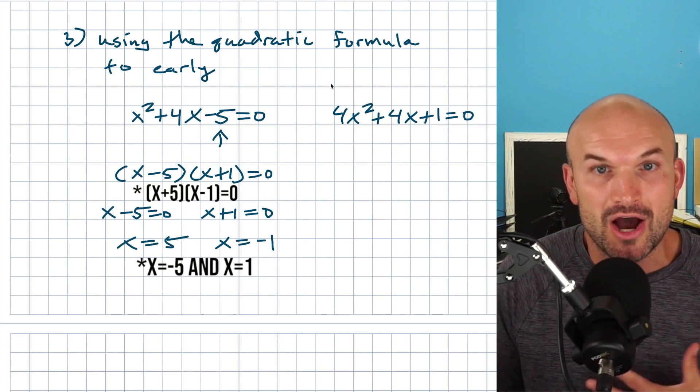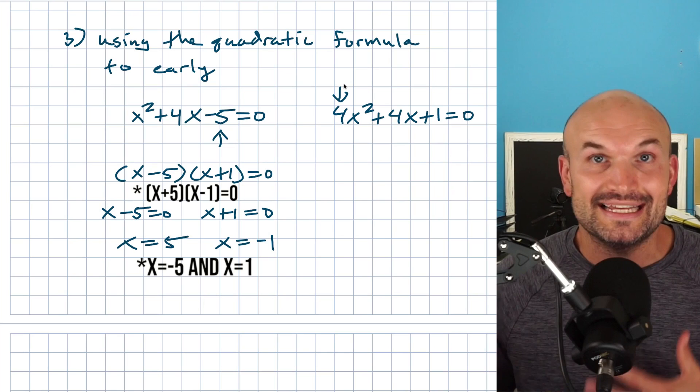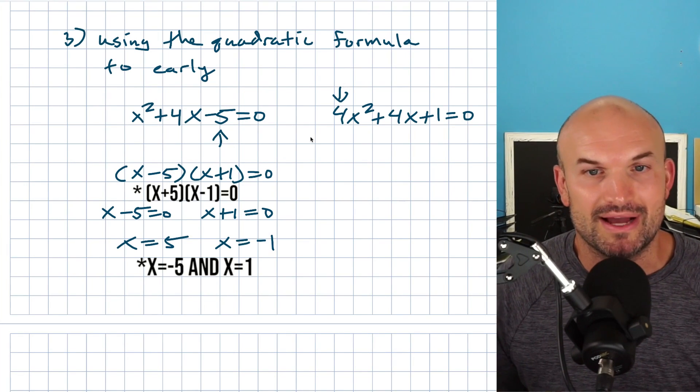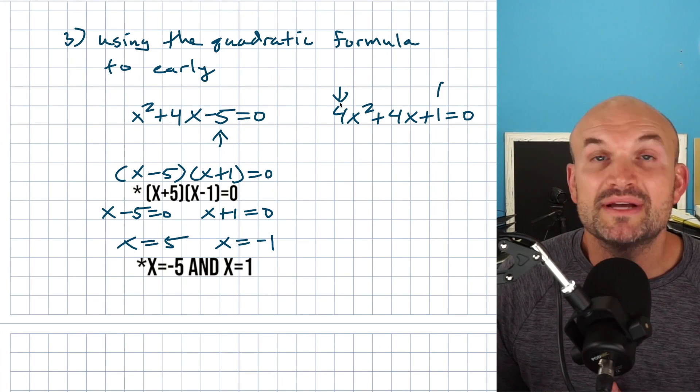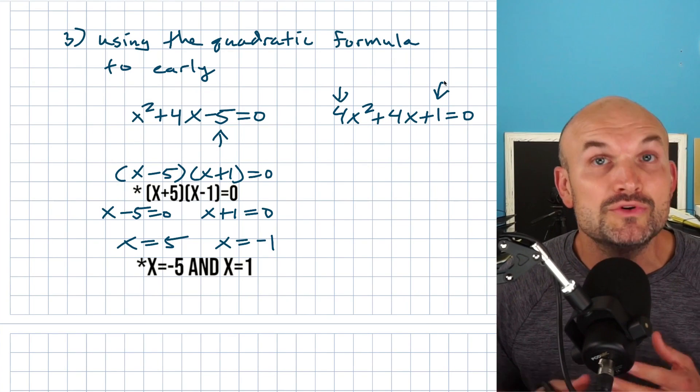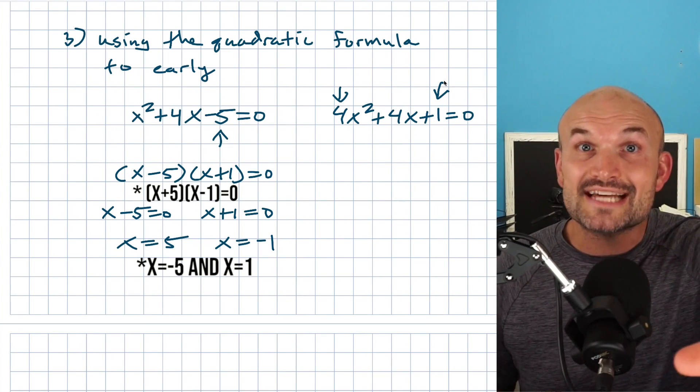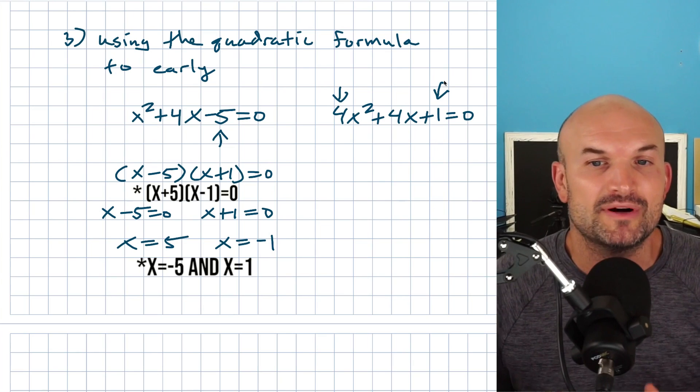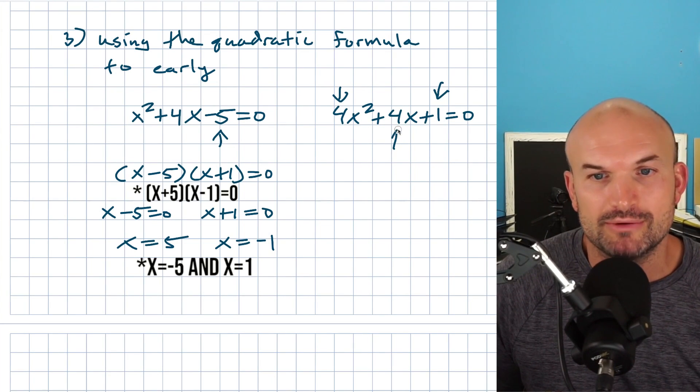Now in the next example, a lot of students will say, oh, I have an a equals one. A is not equal to one. I'm not even going to try to factor this, right? But I don't want you to be confused with that because when your first term is a square number and your last number is a square number, you could have a perfect square trinomial. Not always, but you could have a perfect square trinomial.